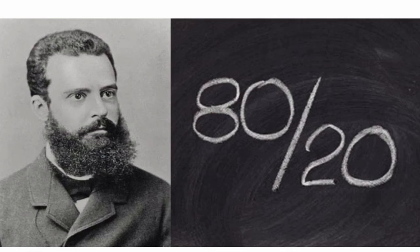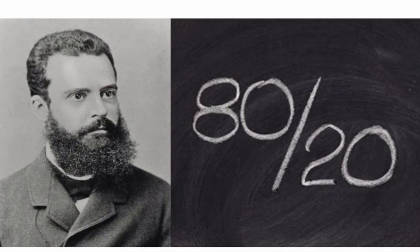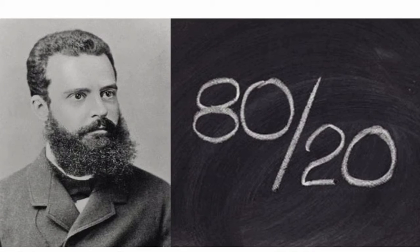A quick story: there was a man named Wilfredo Pareto, who was an Italian economist. He noticed that when he was in Italy, 20% of the people owned 80% of the land, and the same thing applied to wealth. This concept then led people to start applying this principle in every aspect of their lives.